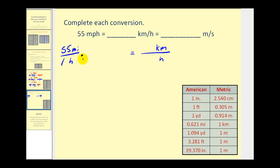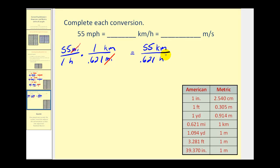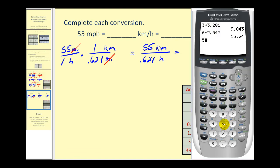We did a similar conversion a moment ago — we want to convert miles to kilometers. We're going to have miles in the denominator and kilometers in the numerator, so the miles will simplify out. The conversion is one kilometer is equal to point six two one miles. Now the miles are gone, and we're left with fifty-five kilometers in the numerator and point six two one hours in the denominator. Since we want this to be kilometers per one hour, we're going to have to divide fifty-five by point six two one. This is approximately eighty-eight point six kilometers per hour.